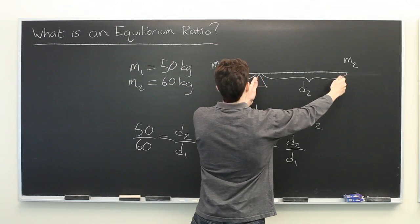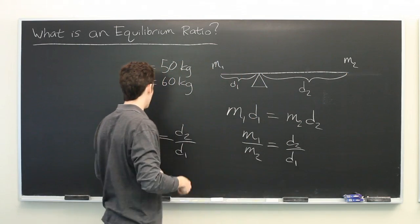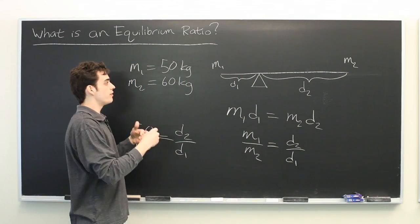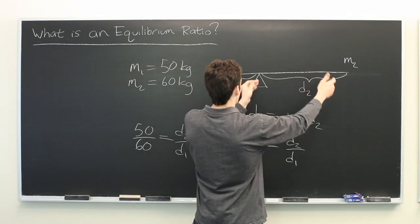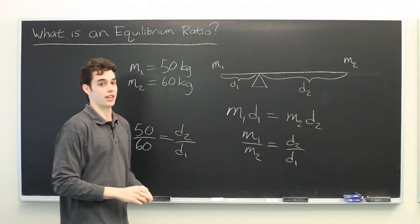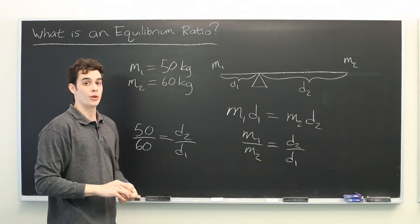So, you need to have 50 units of distance here and 60 units of distance here, whatever that unit might be, or 50 sixtieths of the teeter-totter on one side of the fulcrum, and 10 sixtieths of the teeter-totter on the other side. That will be your equilibrium ratio.